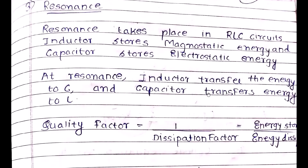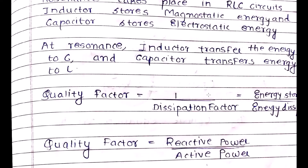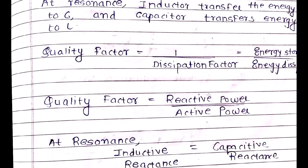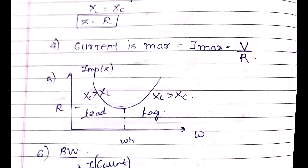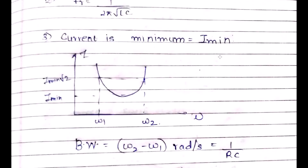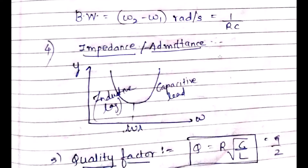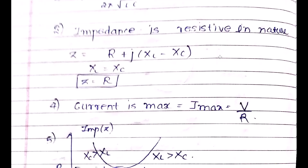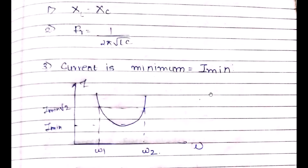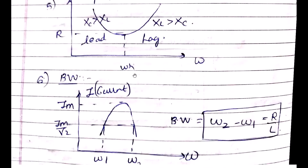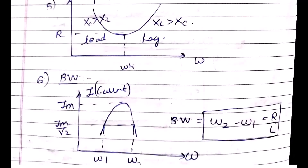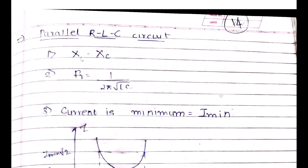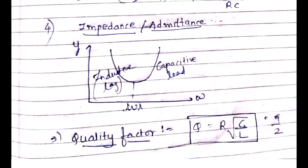To summarize: resonance occurs in an RLC circuit; the inductor stores magnetostatic energy and the capacitor stores electrostatic energy; at resonance, XL = XC giving the resonant frequency fr = 1/(2π√LC). In the series RLC circuit, current is maximum at resonance with bandwidth = R/L, and quality factor Q = (1/R)√(L/C). In the parallel RLC circuit, current is minimum at resonance with bandwidth = 1/(RC), and quality factor Q = R√(C/L). Comparing these two is a very common exam question.